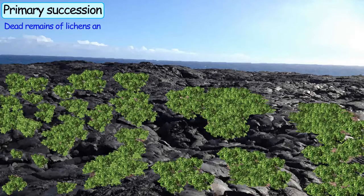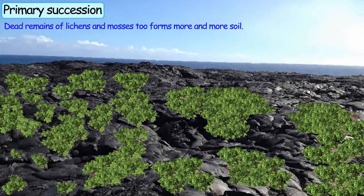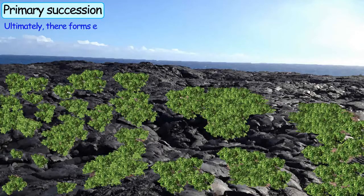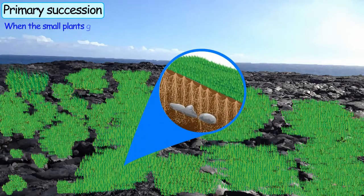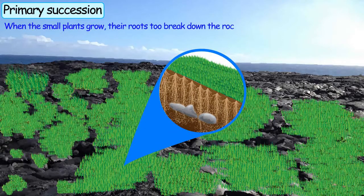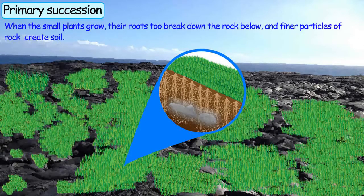Mosses and lichens together with the dead remains of lichens form more soil. And ultimately, there forms enough soil on which small plants can grow. When the small plants grow, their roots break down the rock below and enhance the production of soil.